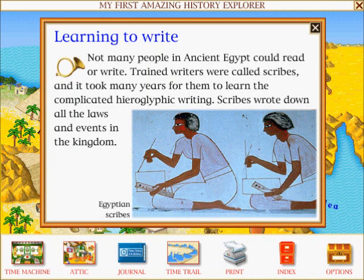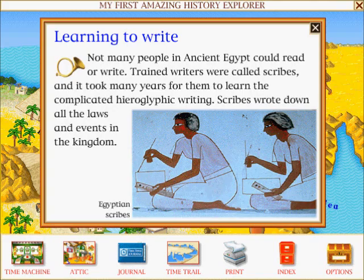Not many people in ancient Egypt could read or write. Trained writers were called scribes, and it took many years for them to learn the complicated hieroglyphic writing. Scribes wrote down all the laws and events in the kingdom.